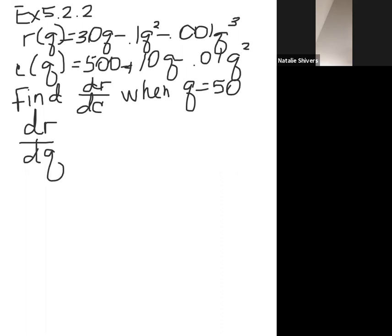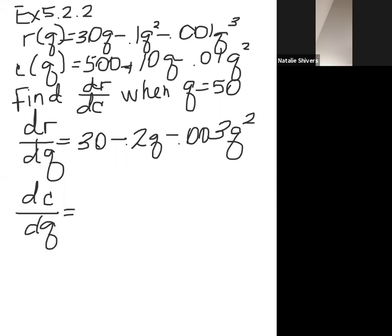I'm going to do the implicit differentiation of both equations. So the top one gives me dr over, I'm using the variable q throughout. So I get dr dq. And when I take the derivatives, I get 30 minus 0.2q minus 0.003q squared. And on the second one, I get dc over, again, dq goes throughout. And the 500 drops off, I get 10 minus 0.02q.